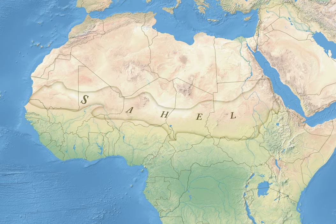The Sahel is the ecoclimatic and biogeographic zone of transition in Africa between the Sahara to the north and the Sudanian savannah to the south. Having a semi-arid climate, it stretches across the south-central latitudes of northern Africa between the Atlantic Ocean and the Red Sea. The name is derived from the Arabic word Sahil, meaning 'coast' or 'shore' in a figurative sense, in reference to the southern edge of the vast Sahara, while the name Swahili means 'coastal dweller' in a literal sense.